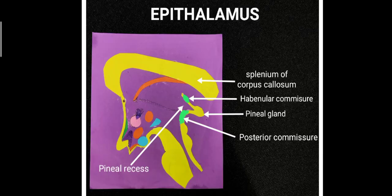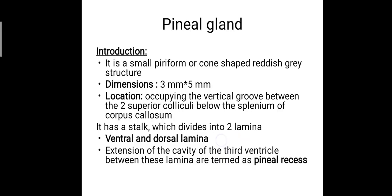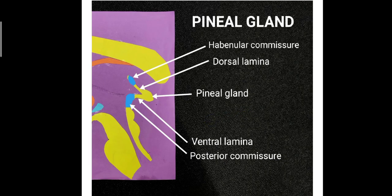In the previous diagram, the third ventricle projects between the two laminae, forming the pineal recess. In the magnified version of the image you can see the habenular commissure, then the dorsal lamina of the stalk of the pineal gland, then the pineal gland itself, then the ventral lamina, and you can also see the posterior commissure.